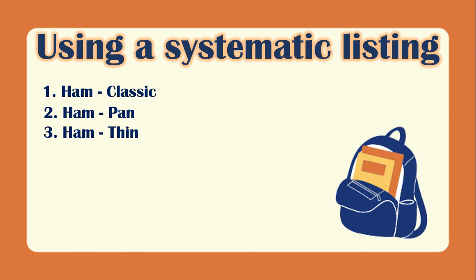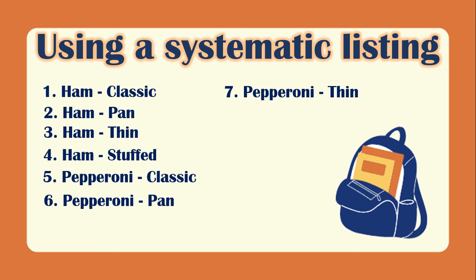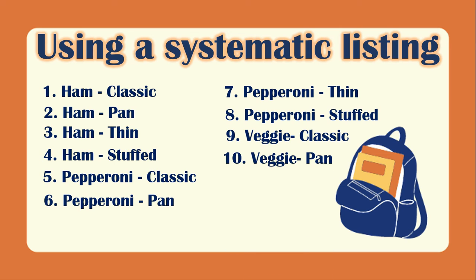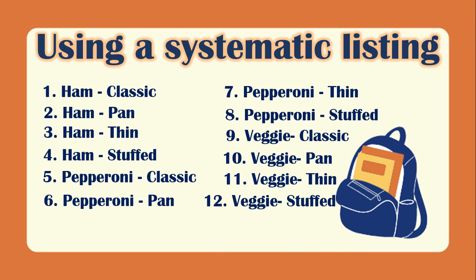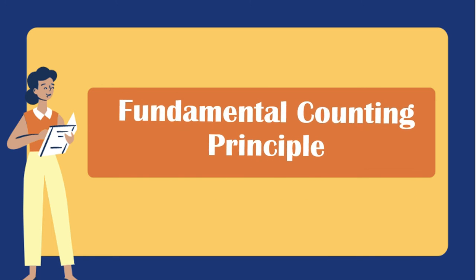Another way of representing is using systematic listing: ham classic, ham pan, ham thin, ham stuffed, pepperoni classic, pepperoni pan, pepperoni thin, pepperoni stuffed, veggie classic, veggie pan, veggie thin, and veggie stuffed. We still have 12 possible options. Those are the methods for writing the sample space to count the number of occurrences. There is also an easier way to determine the total number of possible outcomes: using the Fundamental Counting Principle.